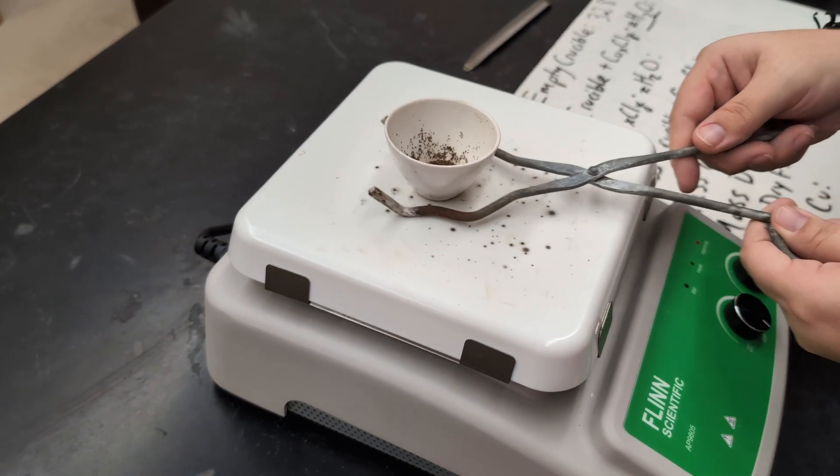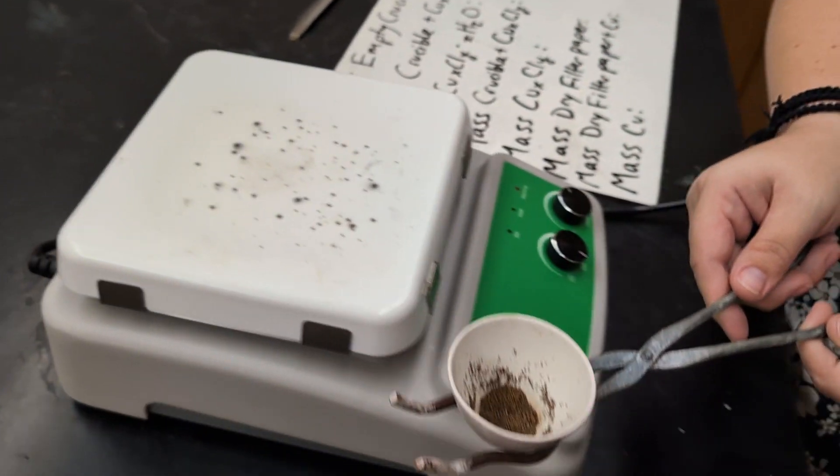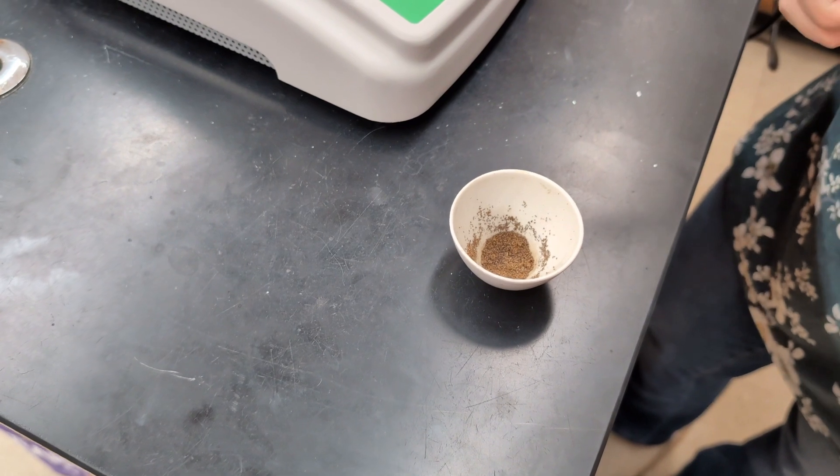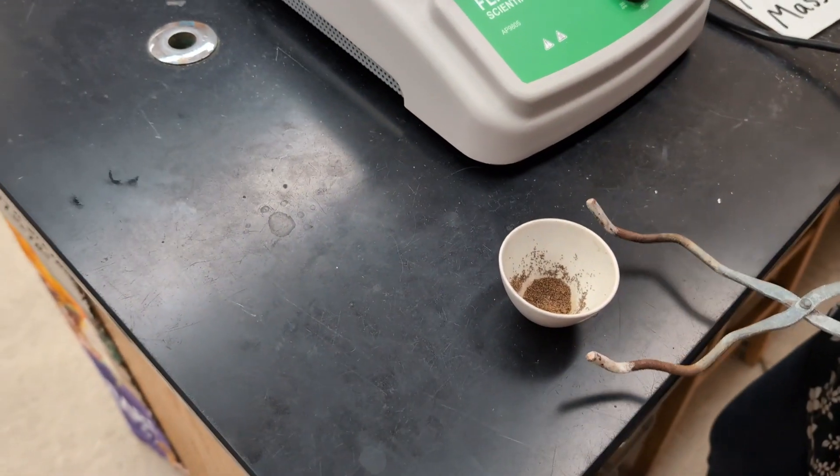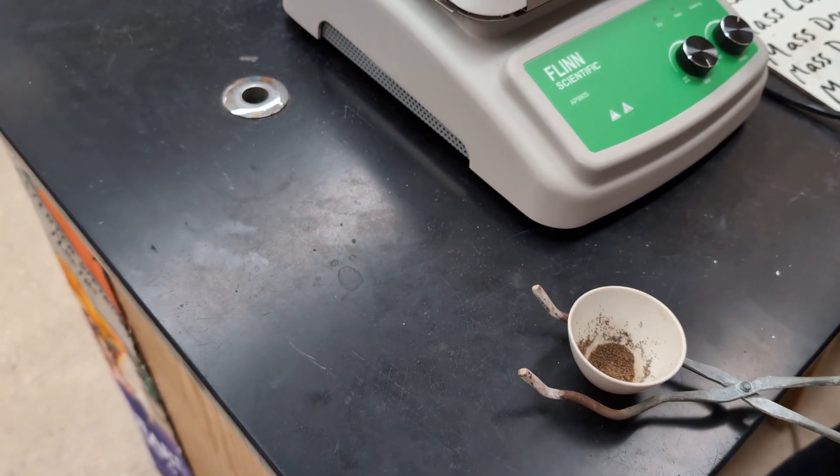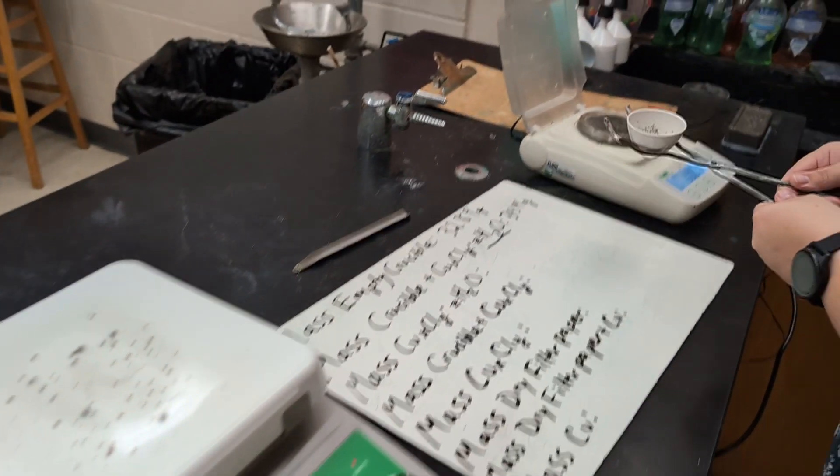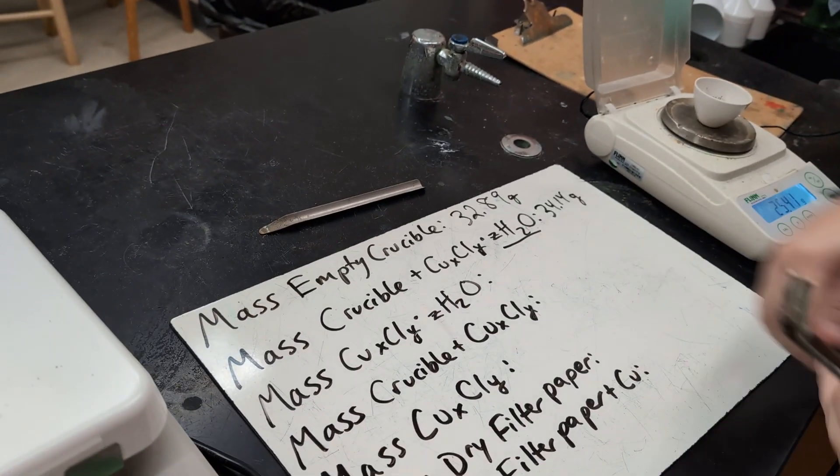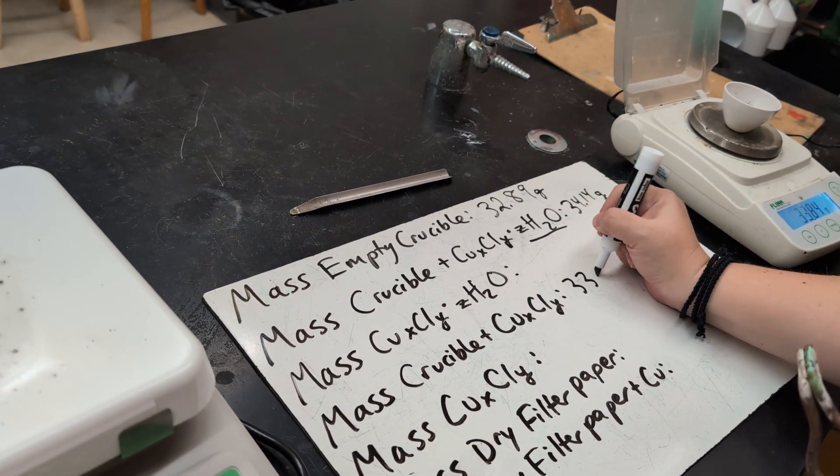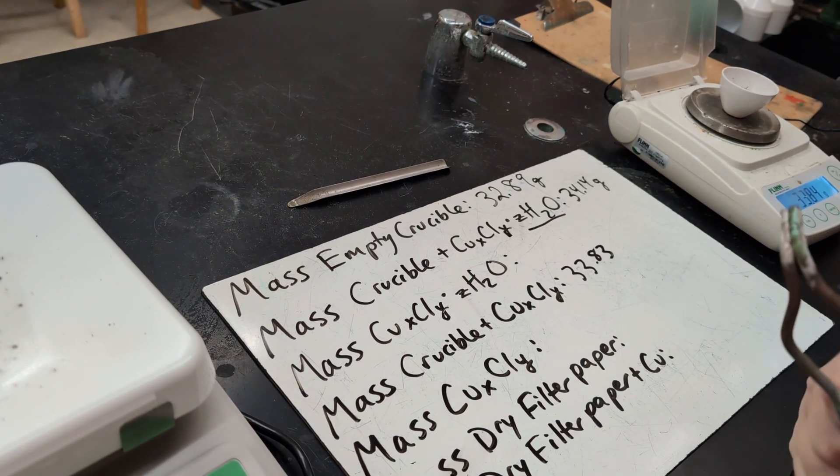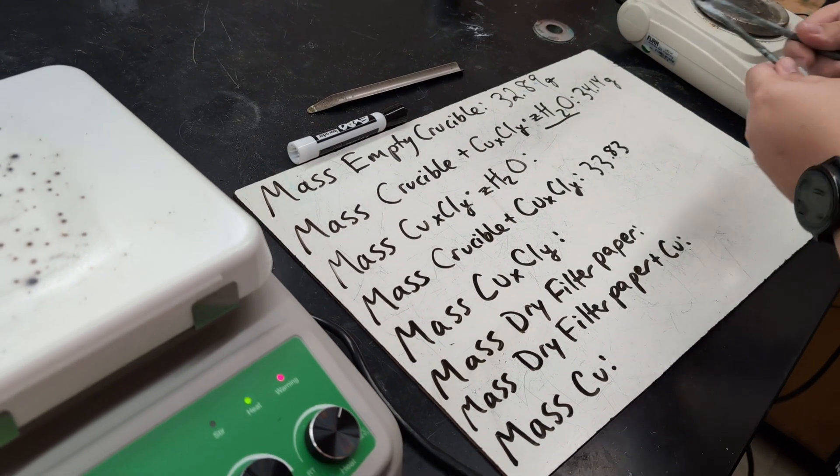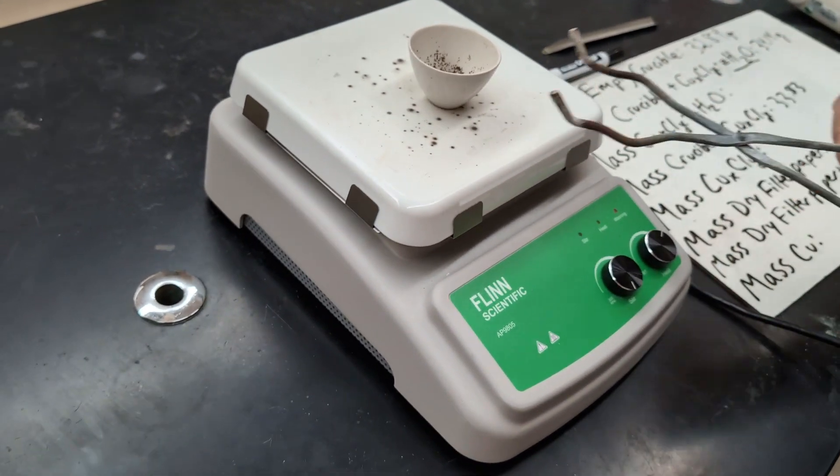So now that it's turned mostly a brown color, we're going to take it off of the heat. Now you can use a Bunsen burner or a portable torch to heat this, but I found a hot plate works pretty well. And we can see that brown color. It has not turned black. We'll record the mass of this. We've got 33.83, but we're going to continue to heat because we need to make sure that it reaches a constant mass. So that way we know that all of the water has evaporated.